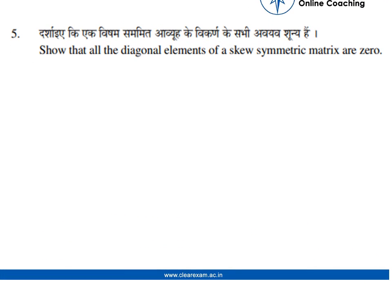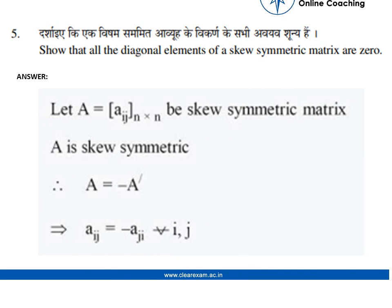Hello everyone. Here we can see a question that says: show that all the diagonal elements of a skew symmetric matrix are 0. A skew symmetric matrix has the property that A equals minus of A transpose. So let's see how we can solve this question.